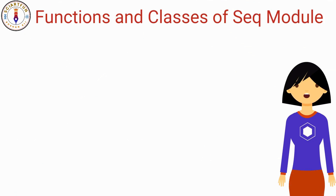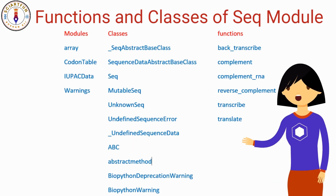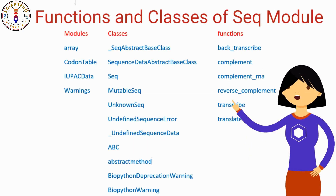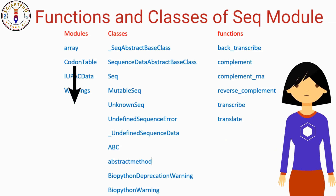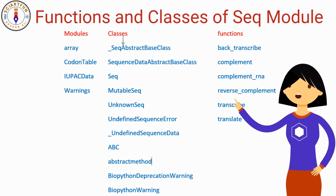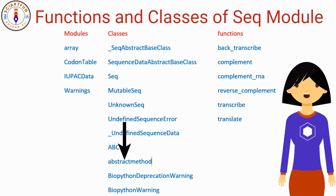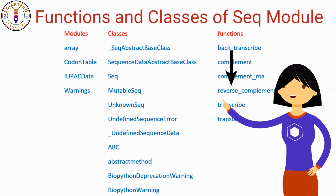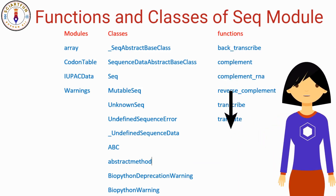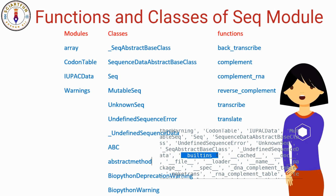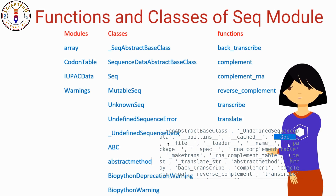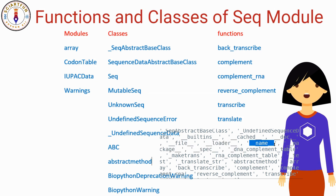You saw all the things mixed together — classes, functions, and modules all intermixed. Let me show you all these things in categories. This module contains submodules imported into the seq module using the import command in the seq.py file. The second column contains class names included in the seq module. The third column has the names of functions in the seq module. We will not talk about the underscore items here.